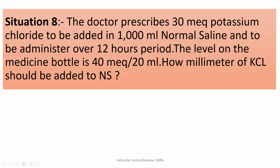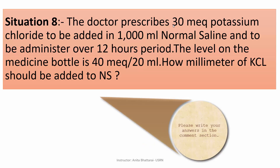In situation 8, the doctor prescribes 30 mEq of potassium chloride to be added to 1000 ml of normal saline and administered over 12 hours. The label on the medicine bottle is 14 mEq per 20 ml. How many ml of potassium chloride should be added to the normal saline? This question is for you all to practice — post your answer in the comment box below, and we will discuss it in my next video.